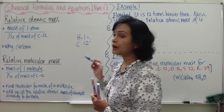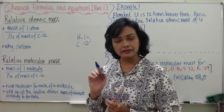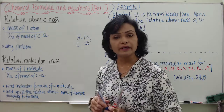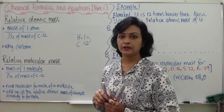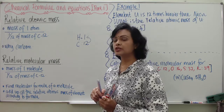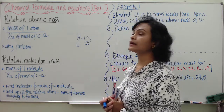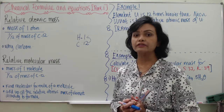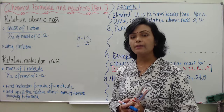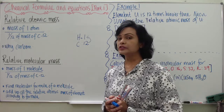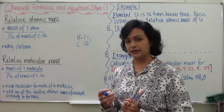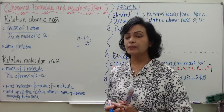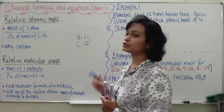One carbon atom has a mass of 12, so students can conclude that carbon is 12 times heavier than hydrogen. Unfortunately, in order to calculate relative atomic mass, we can't use Hydrogen as the reference atom because Hydrogen is a gas, making it very hard to determine its mass exactly.